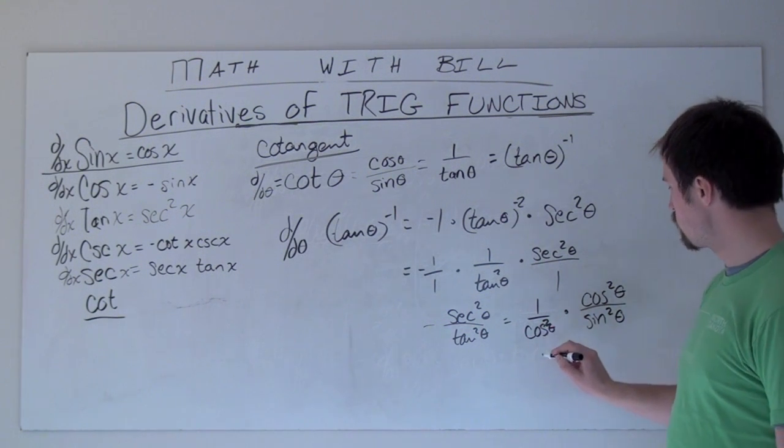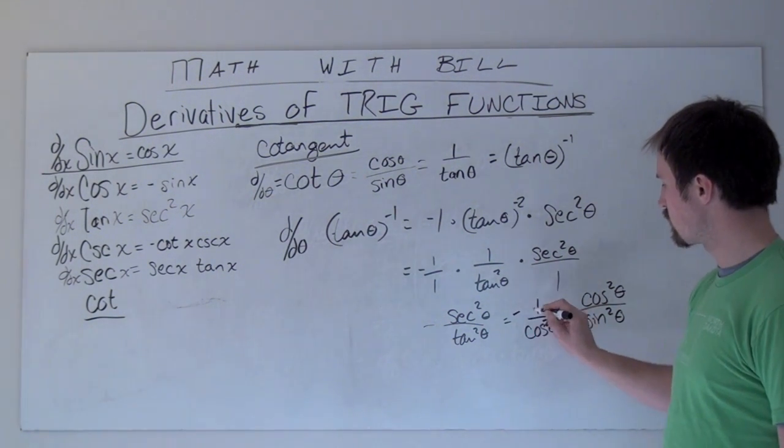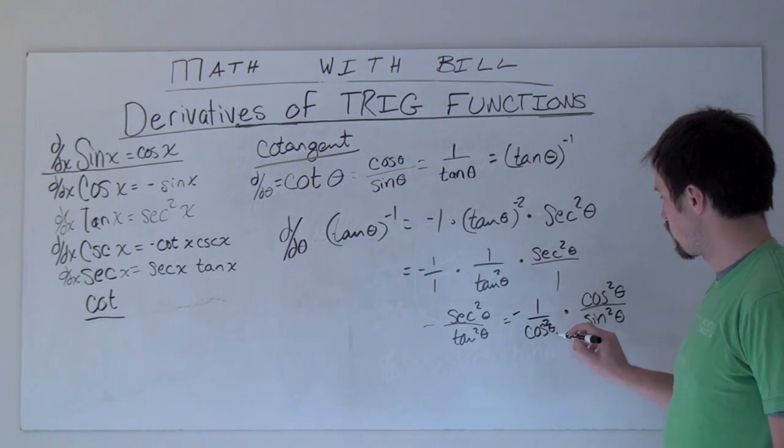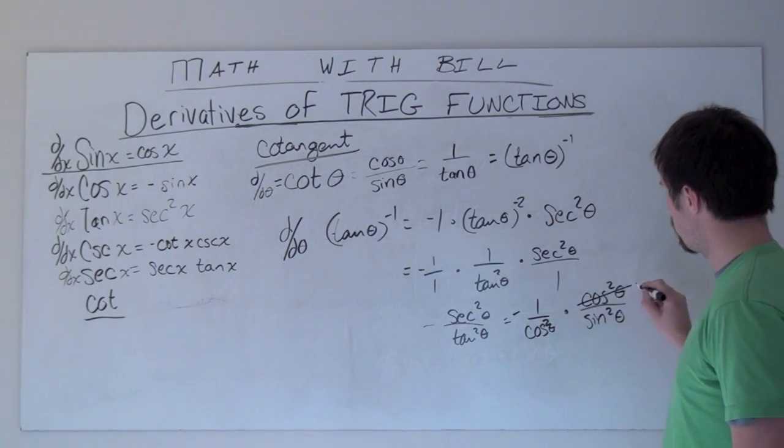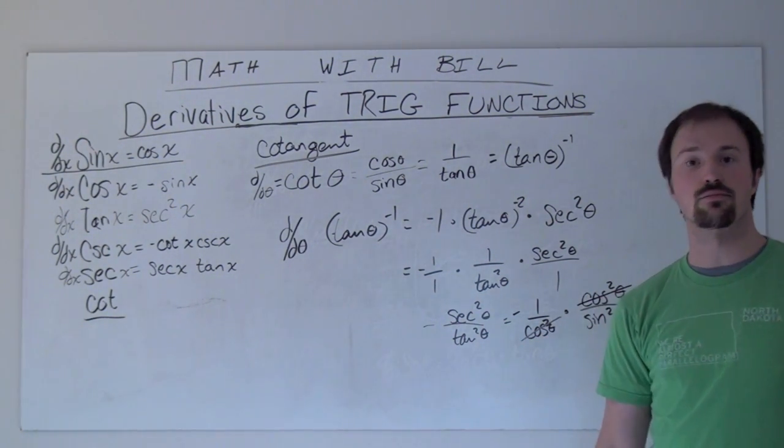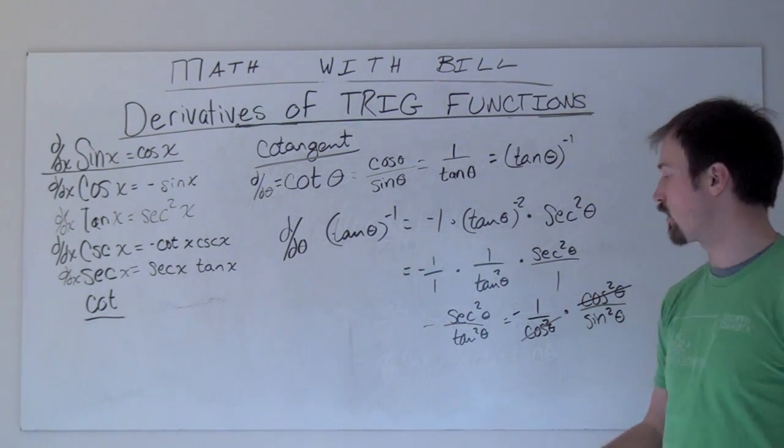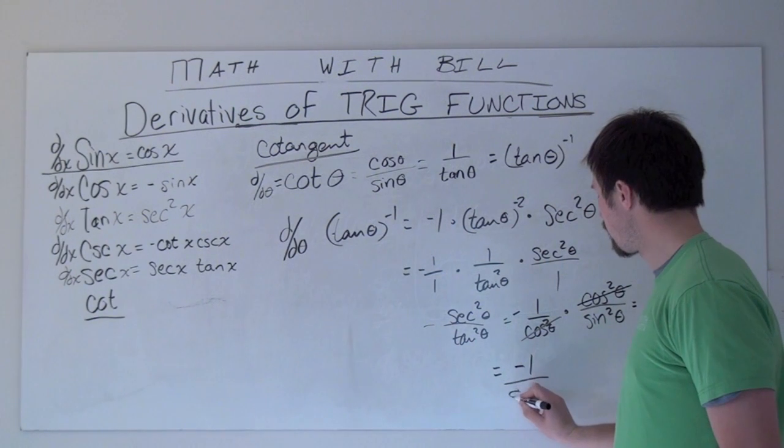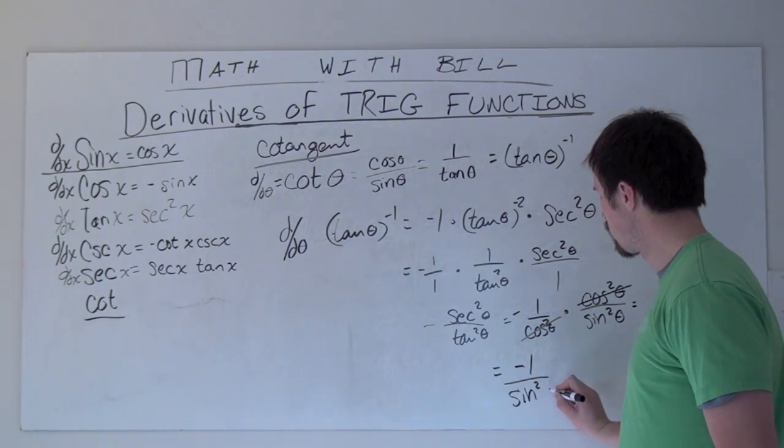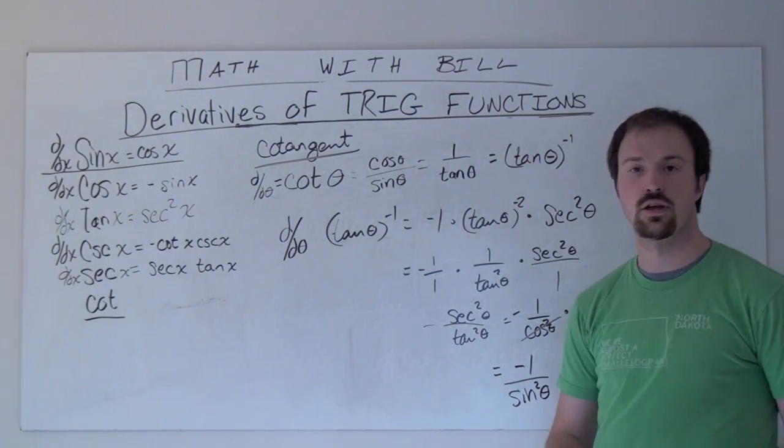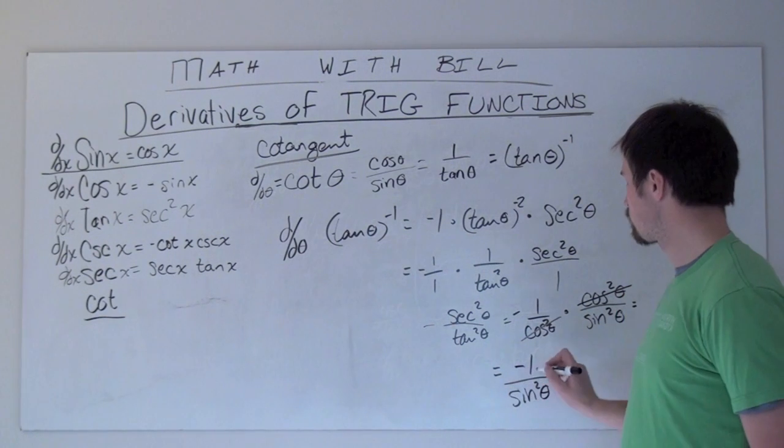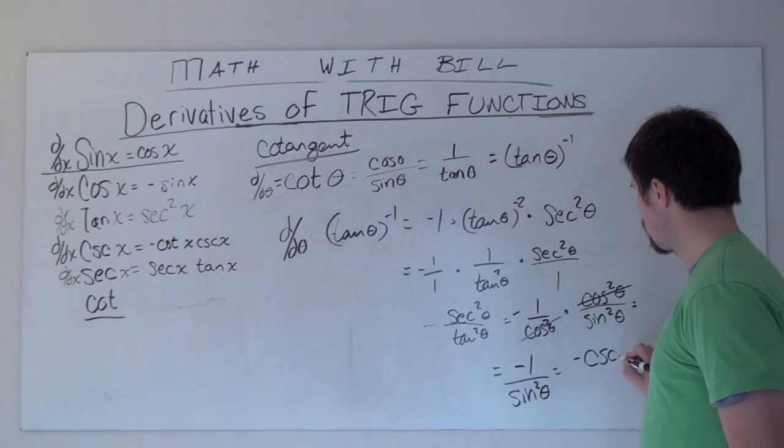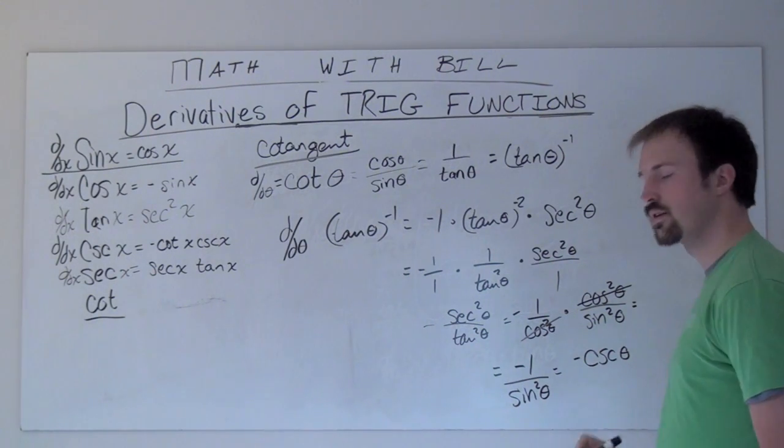And in this multiplication, we've got this negative 1, carrying that over, and the 1 divided by cosine squared times cosine squared. Well, these two we're going to cancel out. Those two cosines will cancel each other out, leaving us with negative 1 divided by sine squared theta, which is more commonly known as the opposite of cosecant squared of theta.